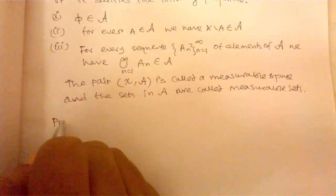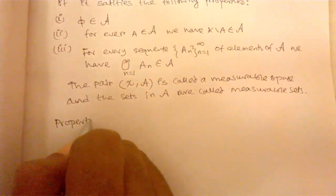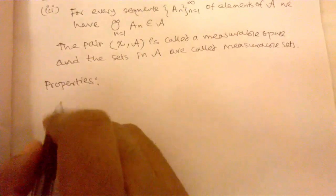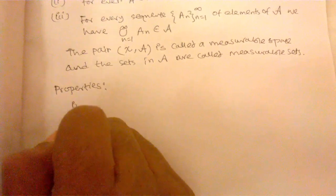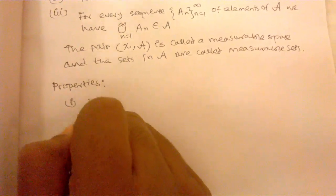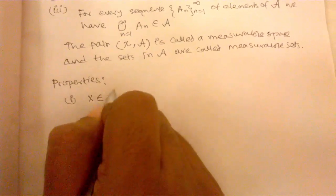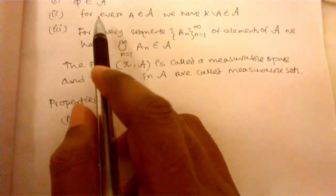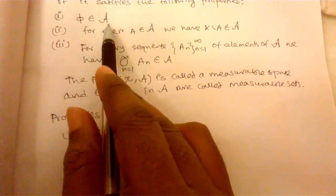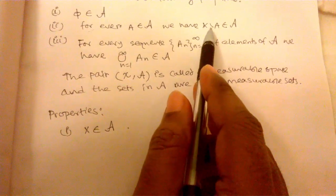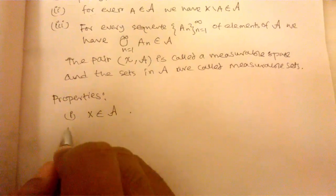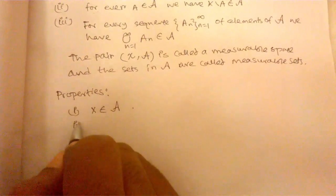Few properties of sigma algebra we want to discuss. Number 1, X belongs to A. Why? Because we use property 1, phi belongs to A, then its complement X minus phi belongs to A. Hence, X belongs to the collection A.